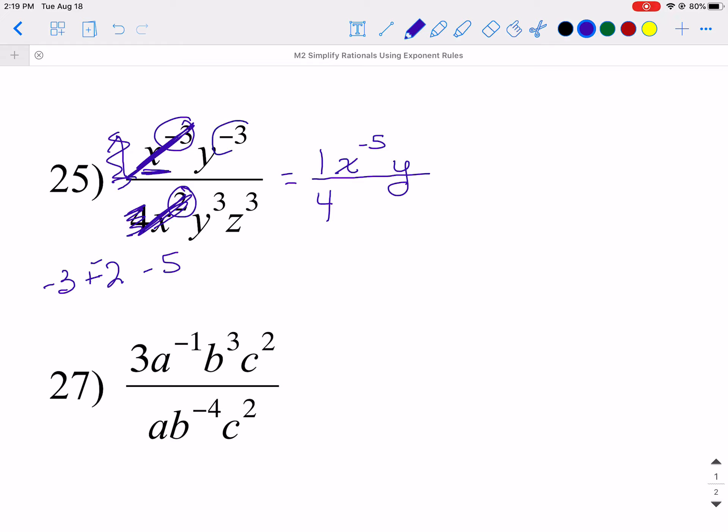So y, negative 3 minus 3. Negative 3 minus 3, which is negative 6. Did you want to say 0? It's negative 6. Okay, so that's done. Now I have nothing else on the top, but I've got this on the bottom, which I need to bring over. So z³.